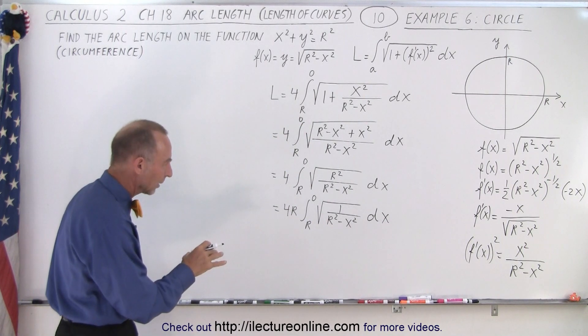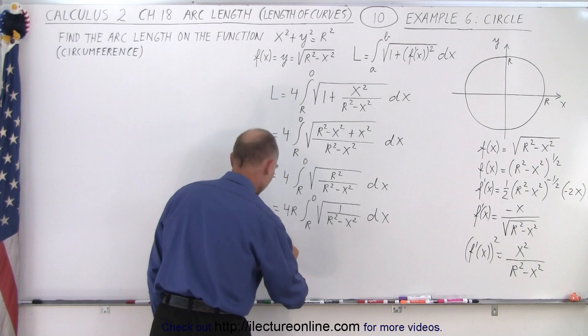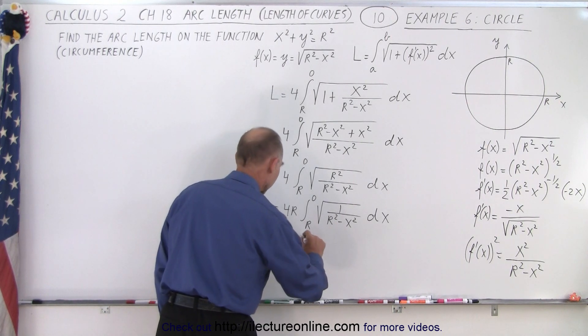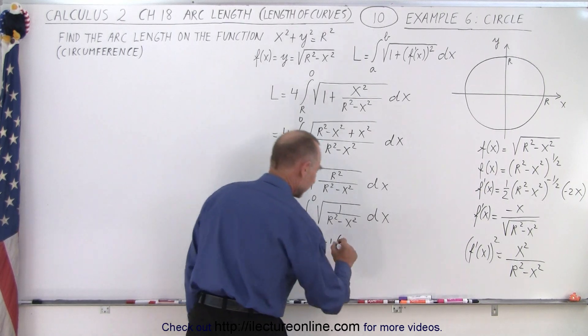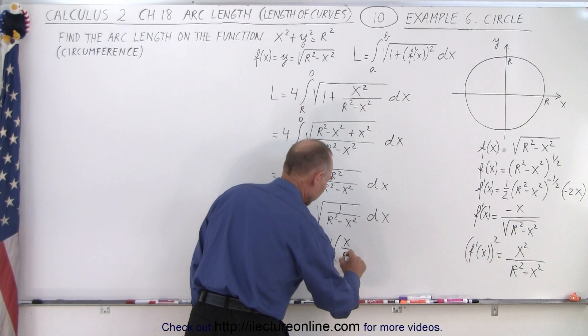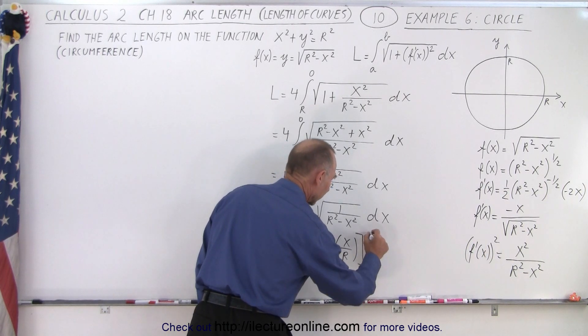And now we recognize the integral because the integral of that, that would be equal to the inverse sine. So this becomes equal to 4r times the inverse sine of, and that would be x over r. This evaluated from x equals r to x equals 0.